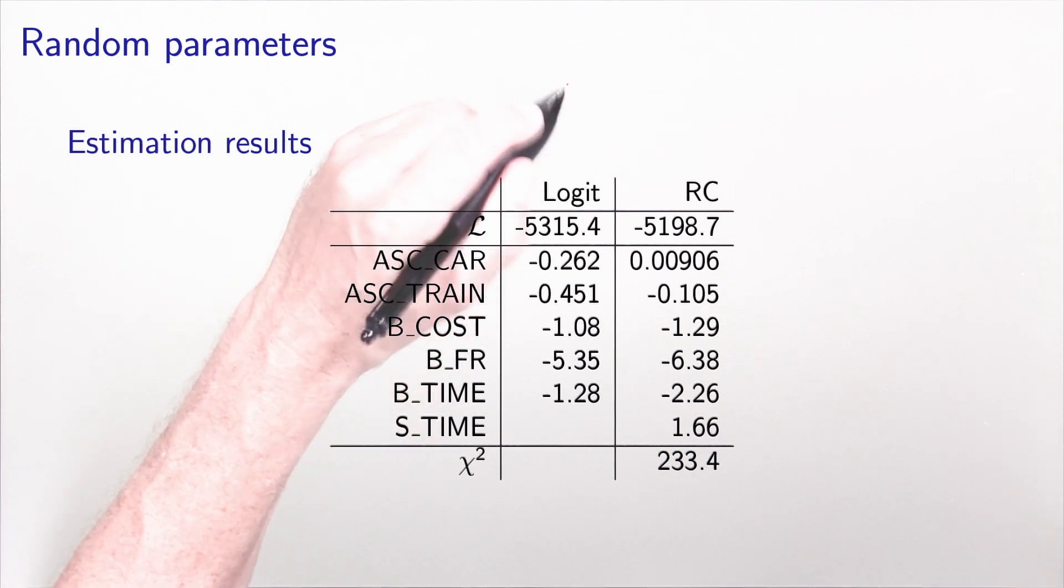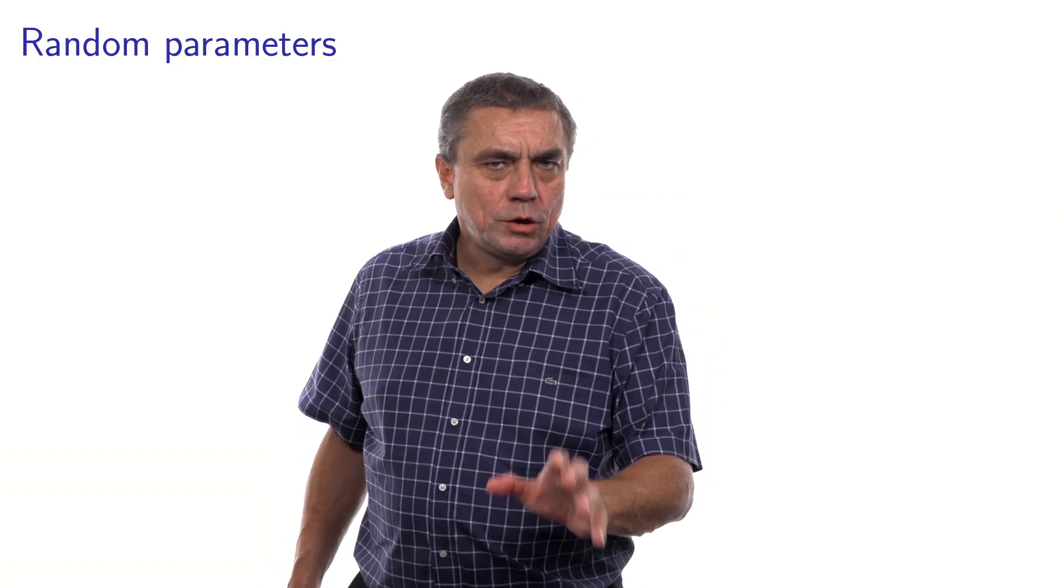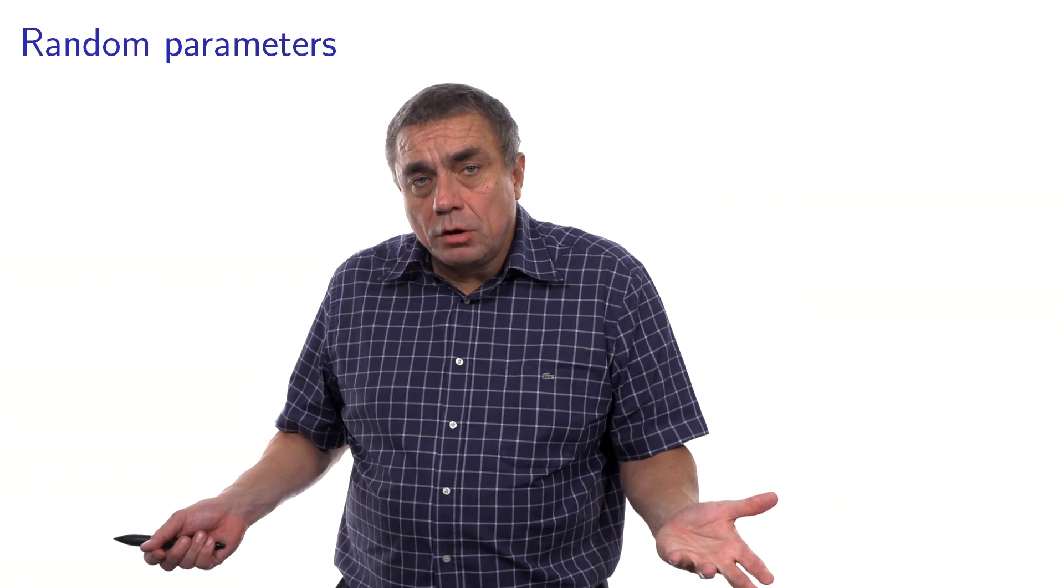In this table, I first report the results of a logit model, where the beta_time parameter is assumed to be fixed. It's the same for everyone in the population. I use it as a benchmark. And then, I estimate a random coefficient model, where beta_time is assumed to be distributed following a normal distribution. And then, this is what I denoted by beta bar t in the previous slide, and this is what I denoted by sigma_t in the previous slide. So there is one comment that we can already make, is that the fit, the value of the final log likelihood, has improved a lot. And this is actually typical when you use mixtures of logit in general, and random coefficients in particular. As soon as you model the distribution, you may experience a very significant improvement of the fit.